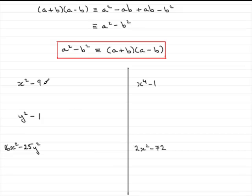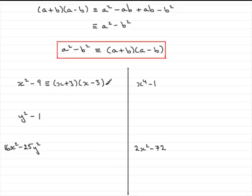So this first one — very basic one — follows this pattern. This is the square of x and this is the square of 3, and we've got a difference sign between them. So this is going to be identical, according to this pattern structure, to x plus 3 multiplied by x minus 3. You could write x minus 3 times x plus 3 — it wouldn't matter, you'd get the same result.